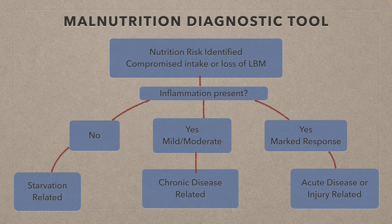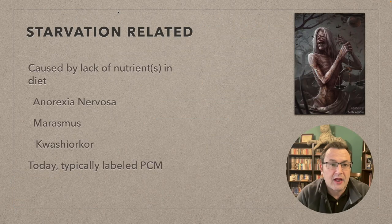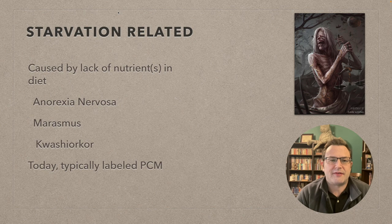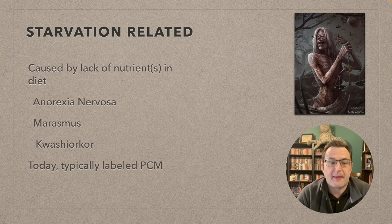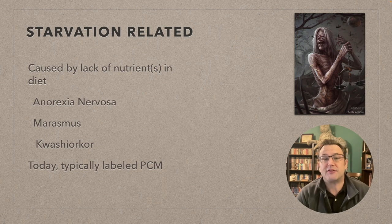Remember the malnutrition diagnostic tool. The macronutrient deficiencies — mostly energy deficiency but not completely — are broken into three parts based on inflammation level: acute disease or injury related, chronic disease related, and starvation related.